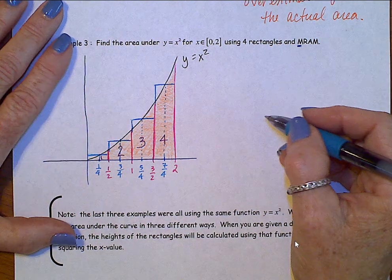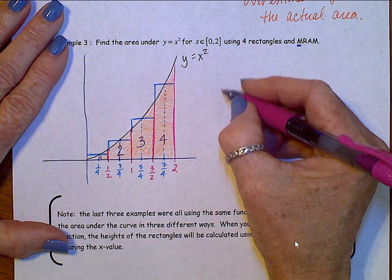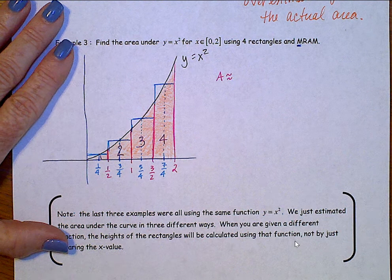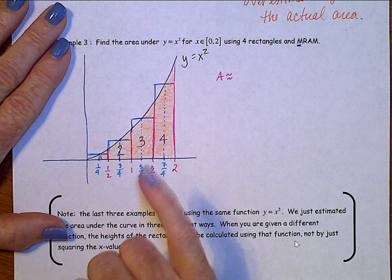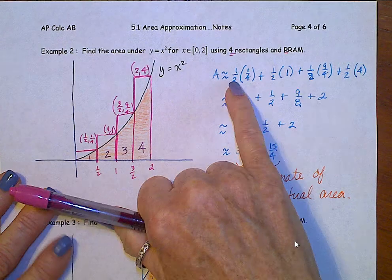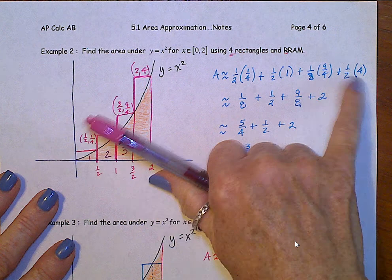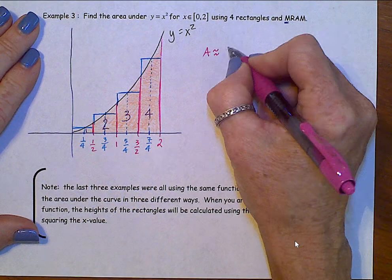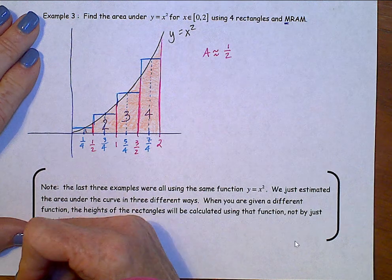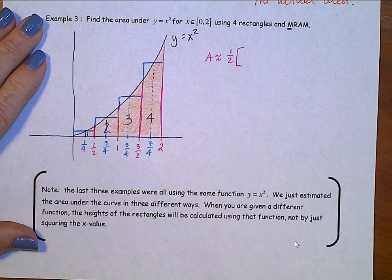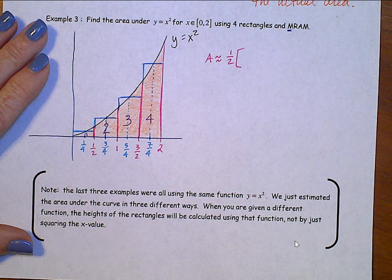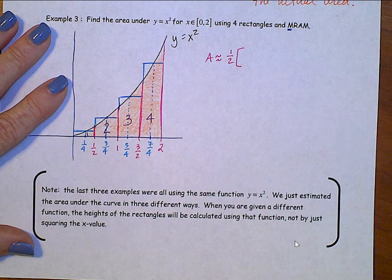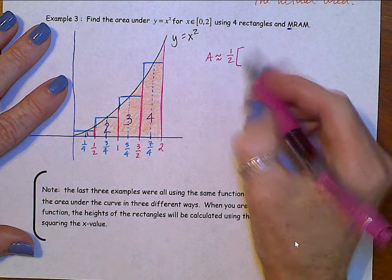Alrighty then, let's find this area. Area is approximately equal to, as I said earlier, we had this common width, half, that was in each one. So, this time, let's pull that half out, and then we'll just list all the heights. Because then, distributing that half through would be finding the area of all of them.